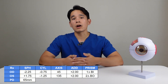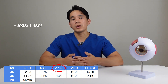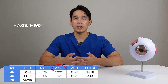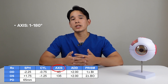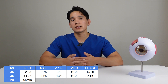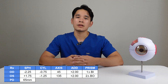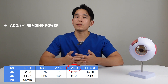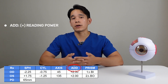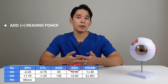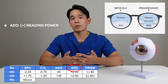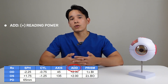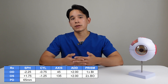The third column is the axis. This number will be anywhere from 1 up to 180, and it simply notates in which axis the cylinder must be placed to correct for your astigmatism. The next column is the ADD. This is for patients who are more middle-aged and need reading power built into their glasses, either like a bifocal or a progressive lens. This number will always be written as a positive value.